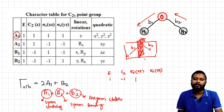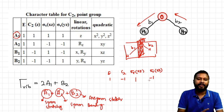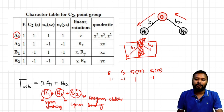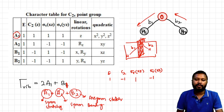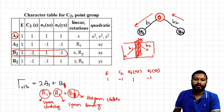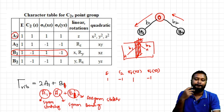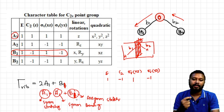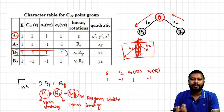I need to make a correction here: the asymmetric stretching is B1, not B2 as I may have written earlier. You can see that 1, -1, 1, -1 corresponds to B1 in the character table. So A1 denotes symmetric stretching, B1 denotes asymmetric stretching, and A1 also denotes symmetric bending. The vibrational modes are 2A1 plus B1.